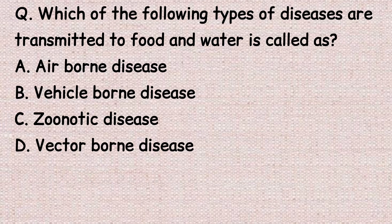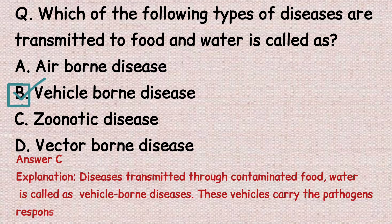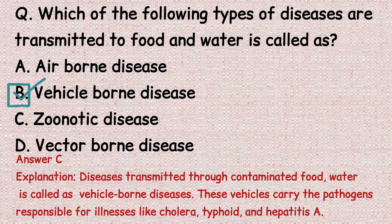The next question: which of the following types of diseases are transmitted through food and water? Option A: airborne disease. Option B: vehicle-borne disease. Option C: zoonotic disease. Option D: vector-borne disease. The correct answer is option B, vehicle-borne disease. Diseases transmitted through contaminated food and water are called vehicle-borne diseases; these vehicles carry pathogens responsible for illnesses like cholera, typhoid, and hepatitis A.